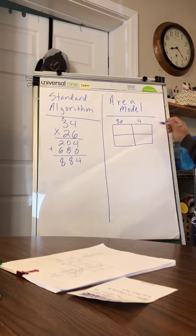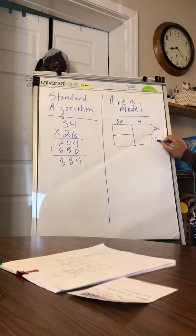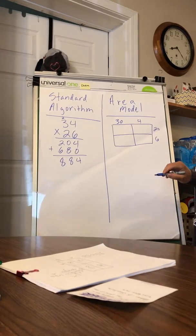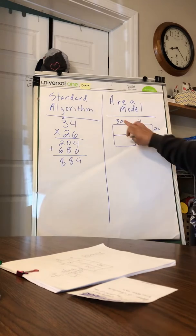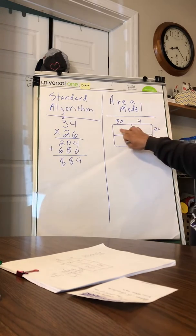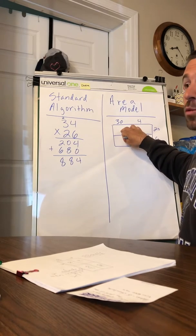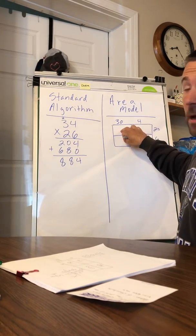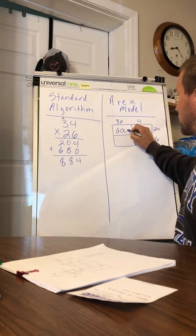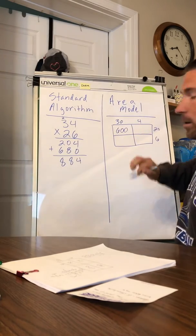So now all I've got to do is multiply. We can start: 30 by 20. My product is going to go here. Well, I know three times two is six. Three times 20 is 60. So 30 times 20 has to be 600. Okay, then I'll do four times 20. Well, four times two is eight, so four times 20 is 80.